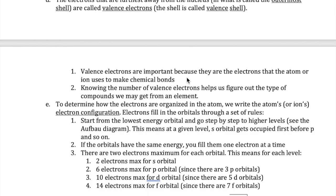In chemistry, we care about where these electrons are located. The electrons furthest away from the nucleus are the least stable ones, and these are the electrons that end up getting used in chemical reactions. We call these electrons valence electrons, and the shell they're in is called the valence shell.